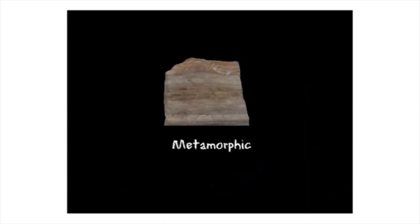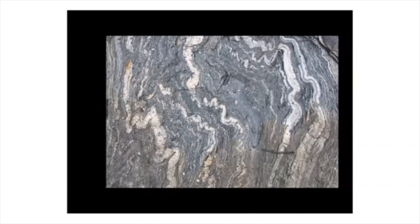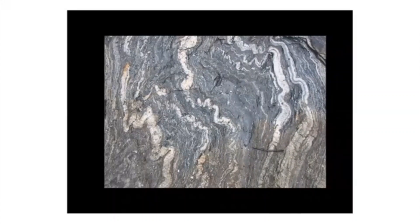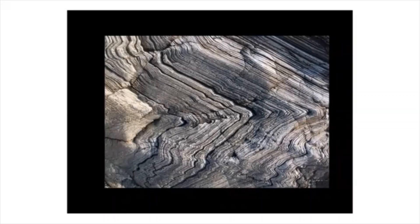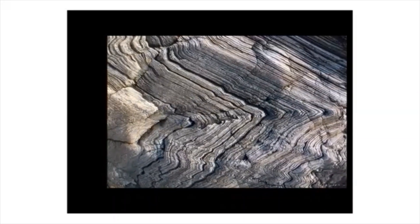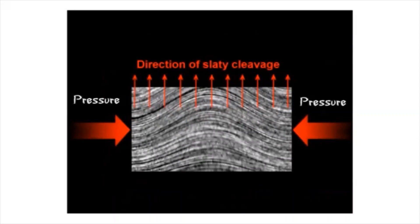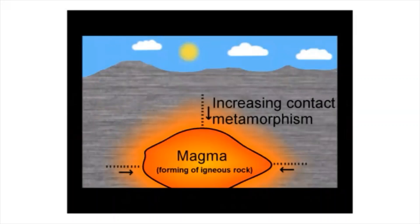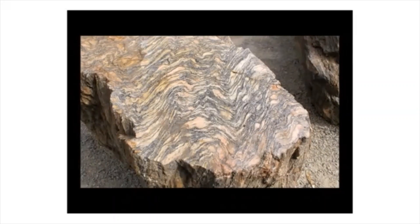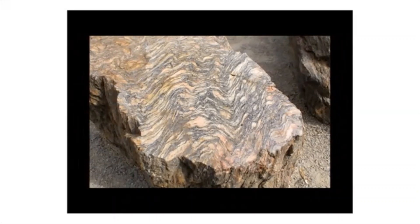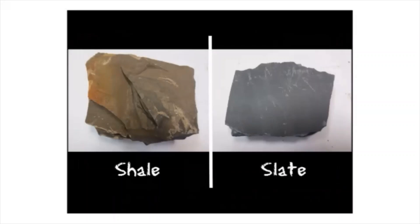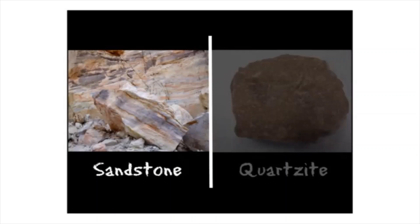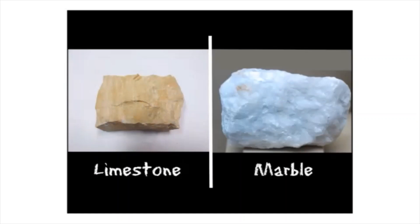The third type is metamorphic rock. The word metamorph means to change form, and metamorphic rock is rock that has been changed by extreme heat and pressure. Sedimentary rock, igneous rock, or even other metamorphic rocks can be transformed into new kinds of rock. For example, shale becomes slate, sandstone becomes quartzite, and limestone becomes marble.